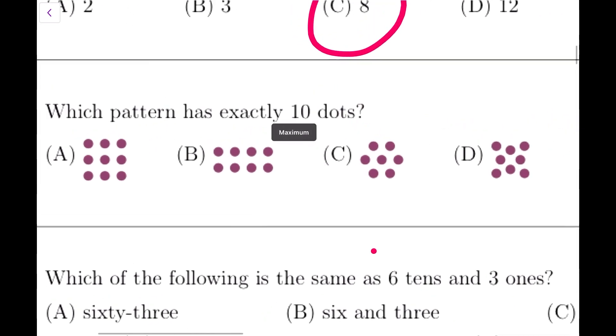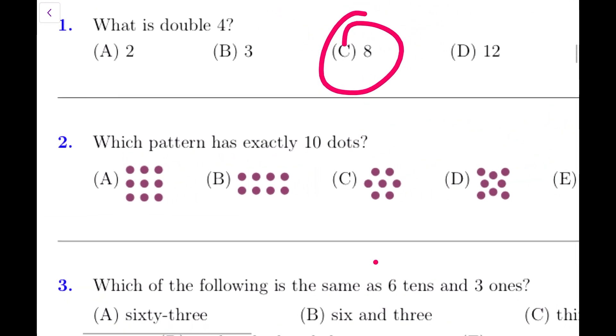Which pattern has exactly 10 dots? Now you can count manually or you can go, this is 3 by 3, that's 9. I can actually easily see that the 10 is here - 2 times 5 is 10.